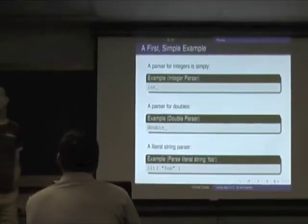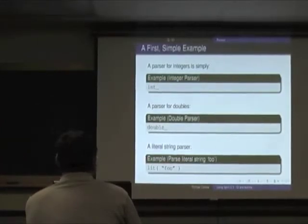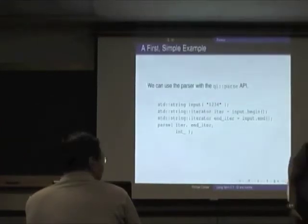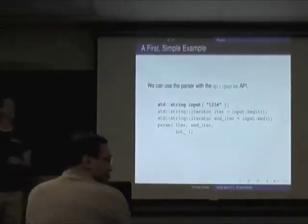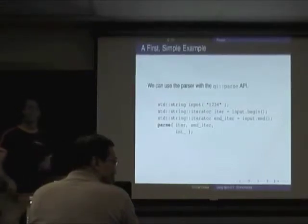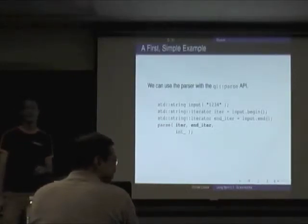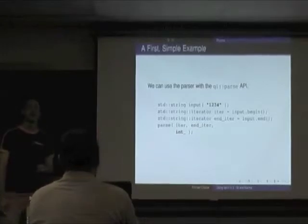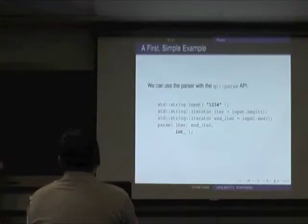You want to write a parser for an int — here's your parser for an int; here's one for a double; here's one for a literal. We have a string '1 2 3 4'. I send that off to the parse API — it takes a begin iterator and an end iterator, and the parser I'm interested in. There we go, I parsed it. If I wanted to parse a double, there it is.